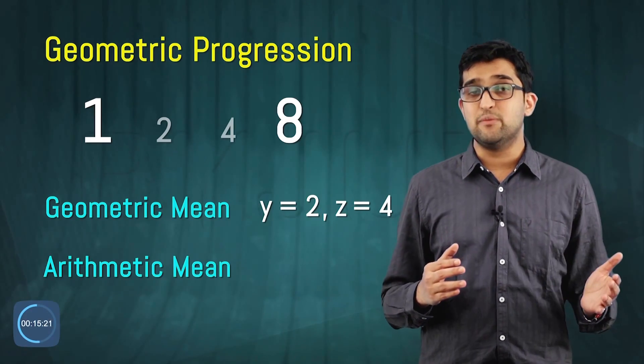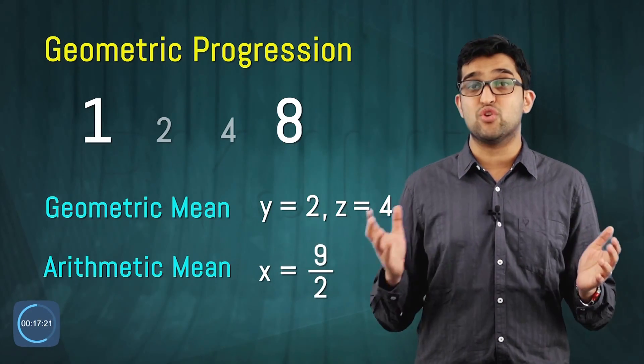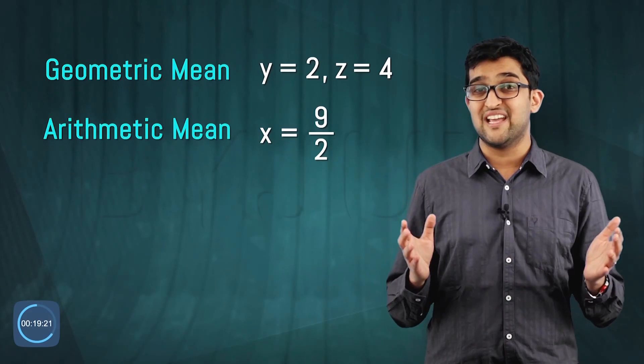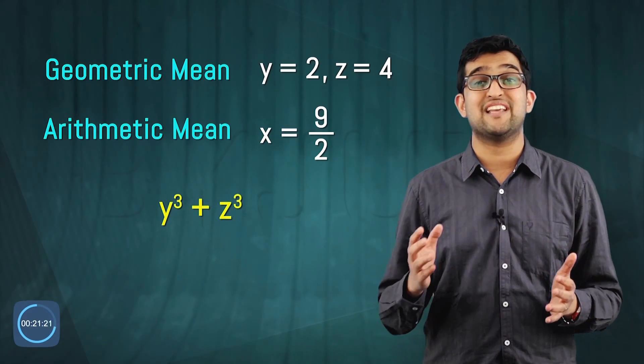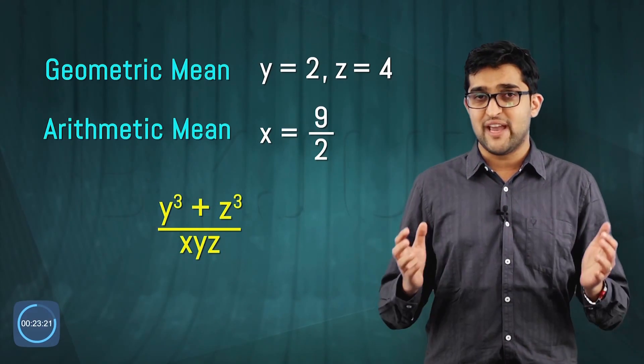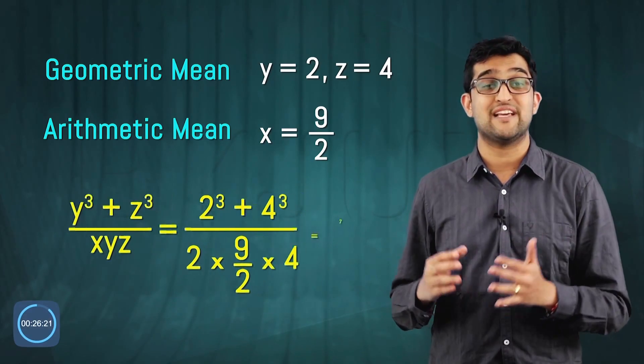The arithmetic mean between 1 and 8 is X equals 9 by 2. Now just substitute in the expression: Y cube plus Z cube by XYZ. What do you get? 2 cube plus 4 cube by 2 into 9 by 2 into 4. That's 72 by 36, that's 2. So what's the answer? Option B.